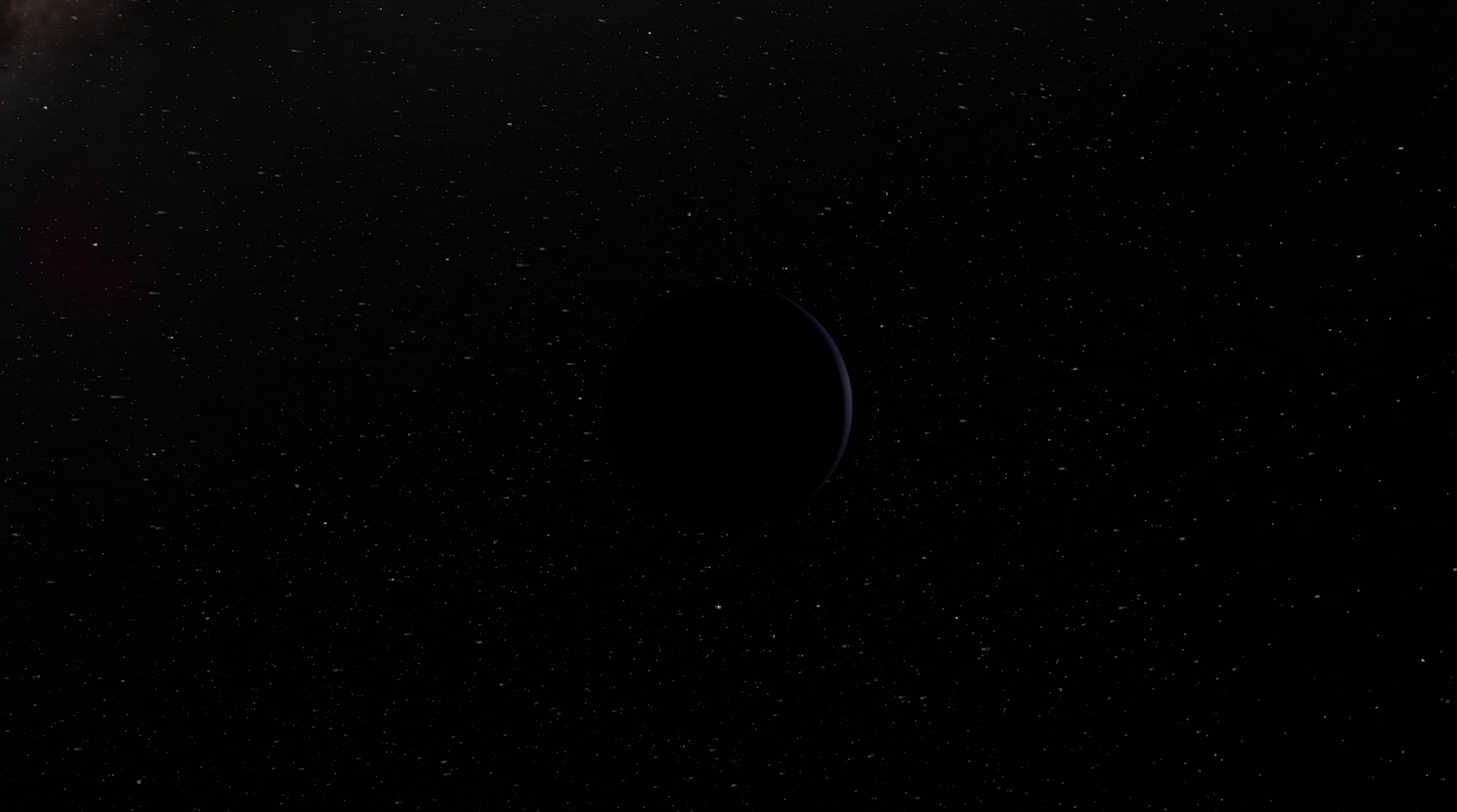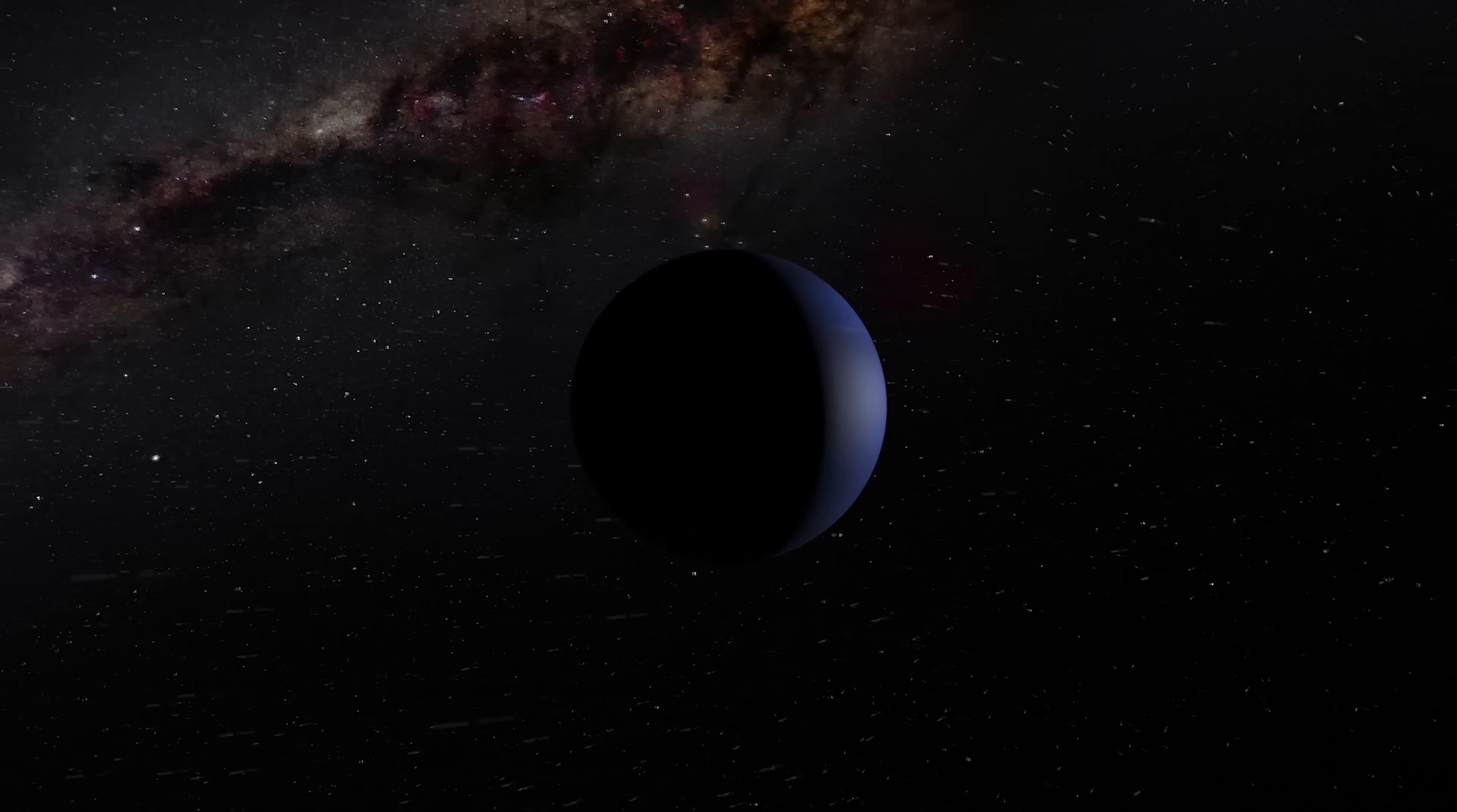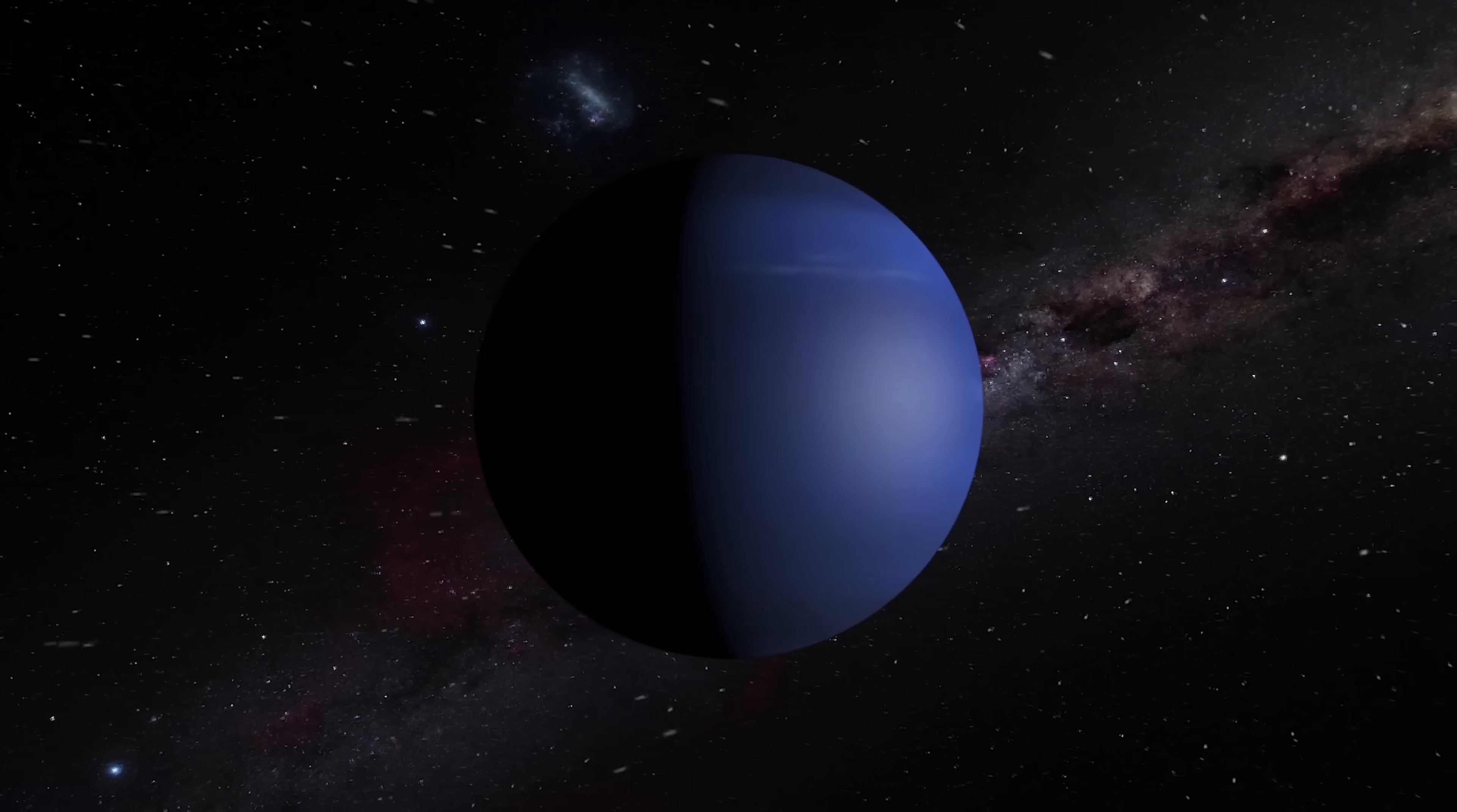The existence of a ninth planet arises to explain certain anomalies observed in the orbits of trans-Neptunian objects, particularly in the Kuiper belt.